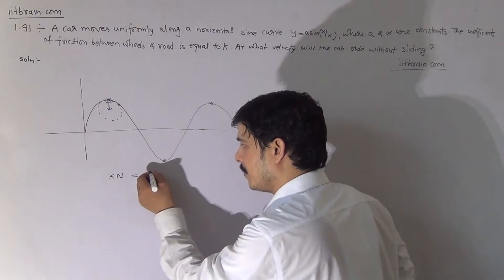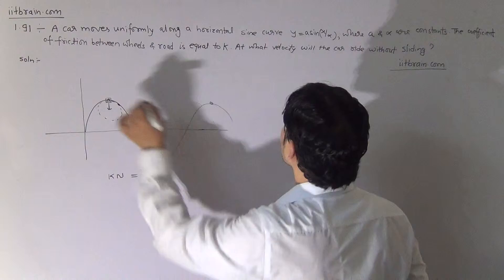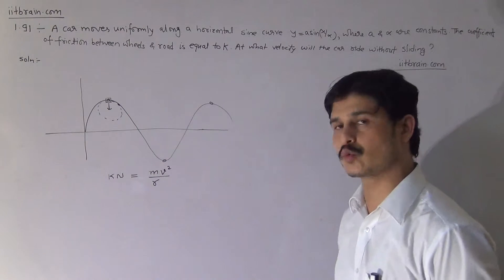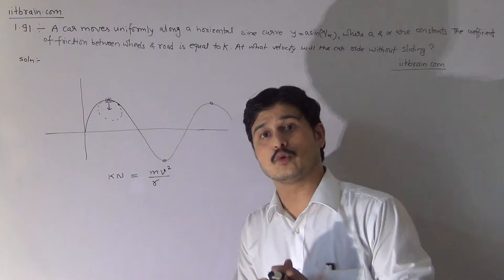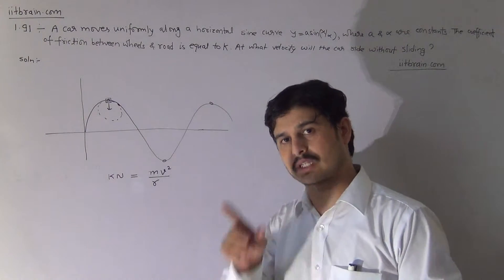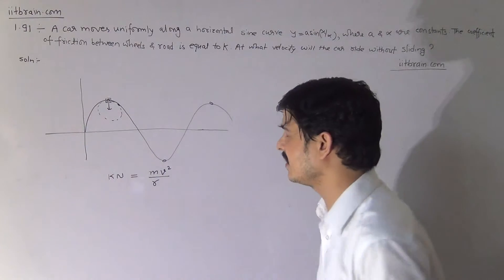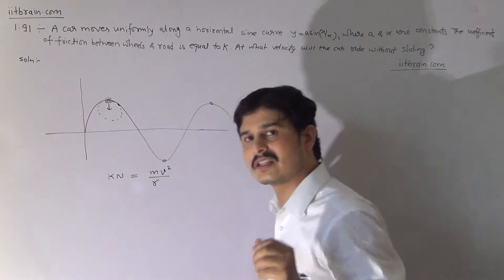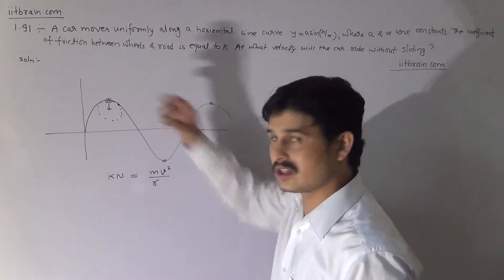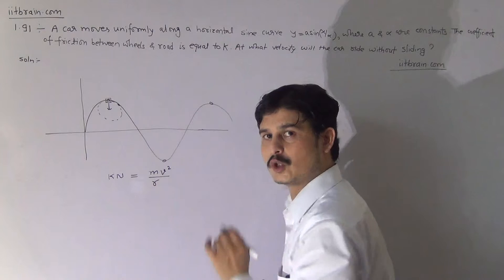The centripetal force will be provided by friction. So the frictional force KN will be equal to mv²/R, where R is the radius of curvature of this point on the curve. This friction component will provide v²/R centripetal acceleration to the car. When a car goes on a road, there is only one force which governs the motion — the force of friction. The direction of this force will be towards the center of the imaginary circle whose radius of curvature we need to calculate. This frictional force KN provides v²/R to the car.